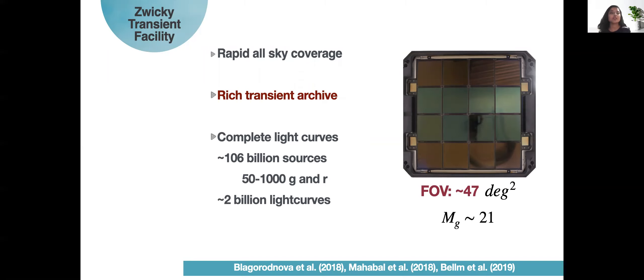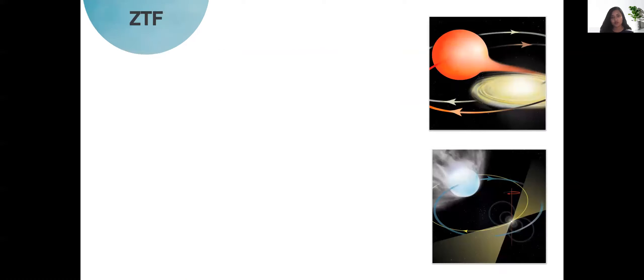For example, in one of the recent data reviews we have 106 billion sources with each of them 50 to 1000 times being observed with G and R band. We also have 2 billion unique light curves that we can look through to find interesting compact objects.